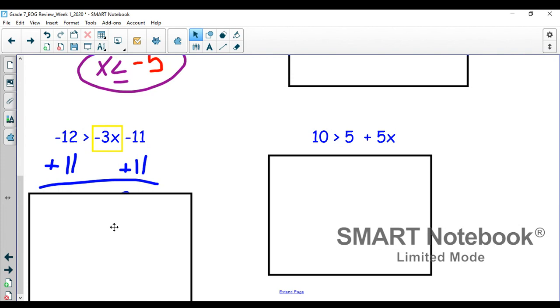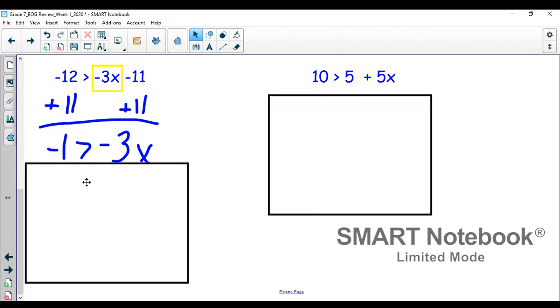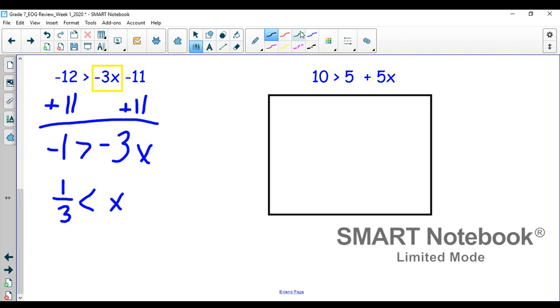So the first thing we do is we add 11 to each side and we find that -1 is greater than -3x because -12 plus 11 is -1. From here, we're going to divide each side by -3. -1 divided by -3 is 1/3. And x is on this side. The key here is because we divided by that negative at the end of the problem, the inequality sign flips.